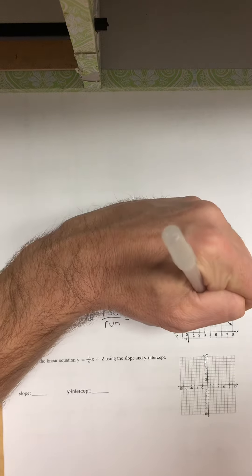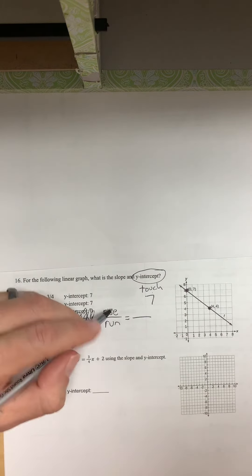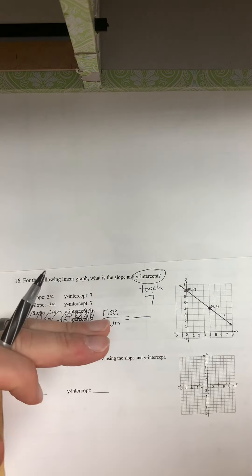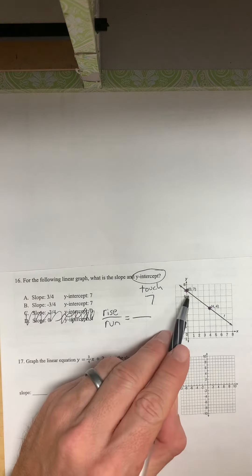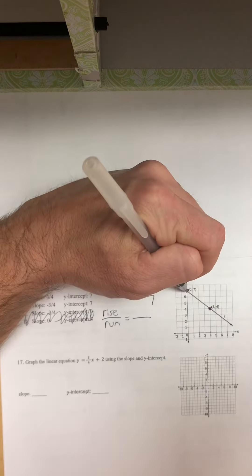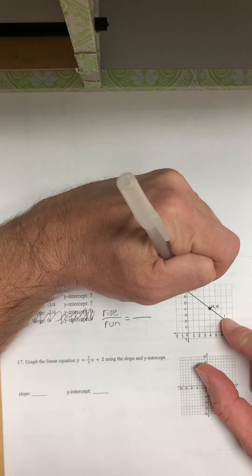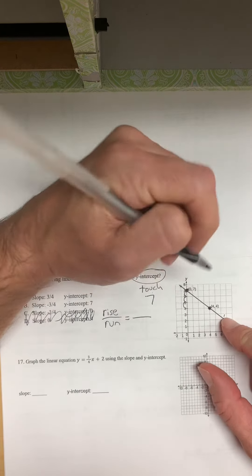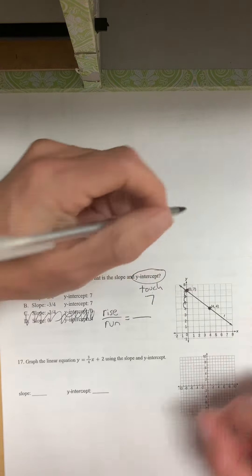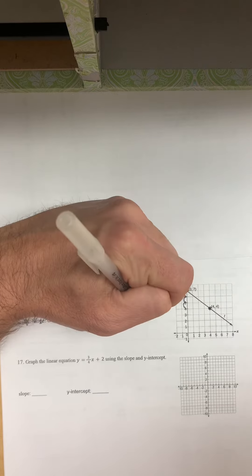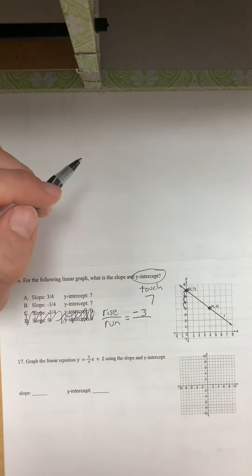So we've got a point right here. We've got another point right here. So rise is how far up or down you have to go to get from this point to this point. So to get from here to here, we have to go down. So we go down 1, 2, 3. So we're going down 3. If it's down, we write a negative. And how far did we have to go down? 3. So the rise is negative 3.